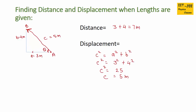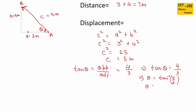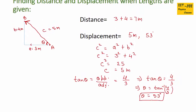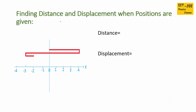For the direction, we find angle theta using tan: tan θ = opposite over adjacent = 4/3. So θ = tan⁻¹(4/3), which gives θ = 53 degrees. Therefore our displacement is 5 meters at 53 degrees — the direction is north of west, so north-west.